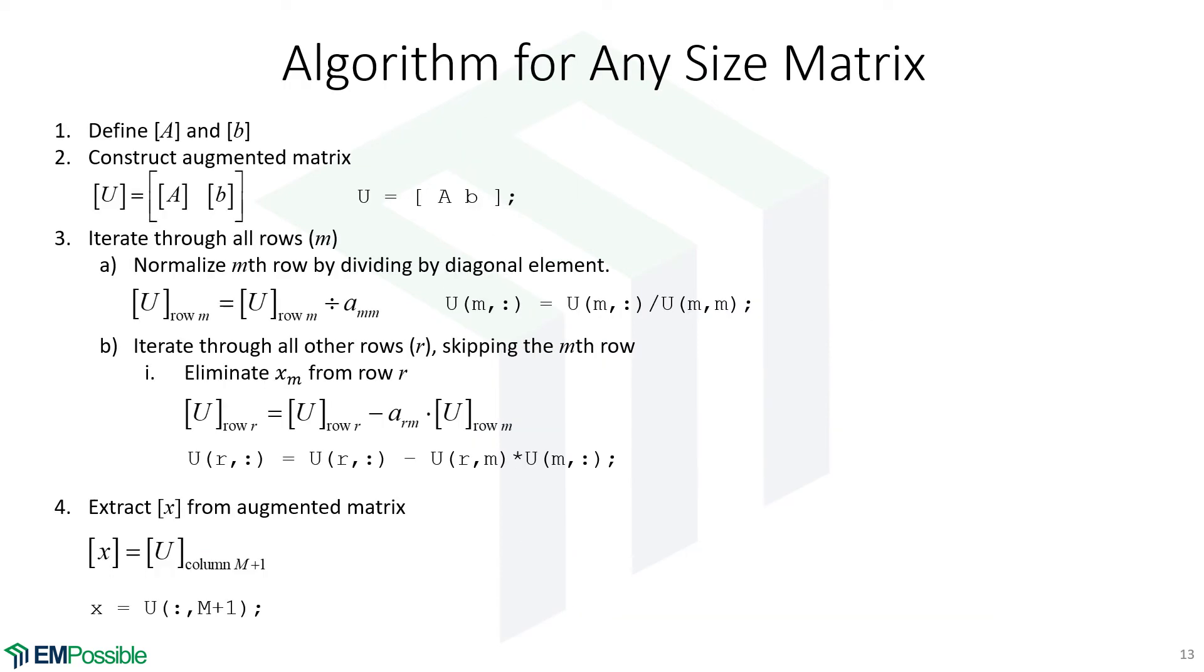Here's the algorithm for any size matrix. This can be done by hand or it can be done with a computer program. In the beginning, we need our A and B. That comes in as inputs. Given those, the first thing we'll do is we'll construct our augmented matrix. We'll call the augmented matrix U, which has A on the left and B on the right. The MATLAB code to do that is just in square brackets A and B, as long as these have compatible size, and hopefully they do or it's not a valid problem, that calculates our augmented matrix U very easily.